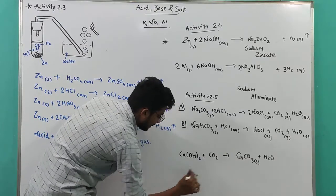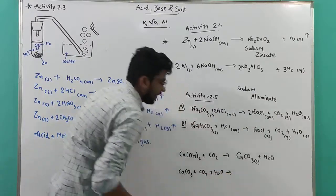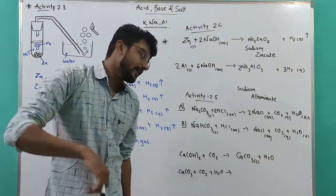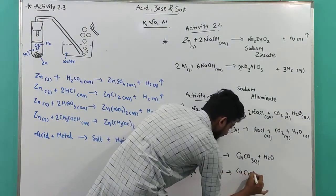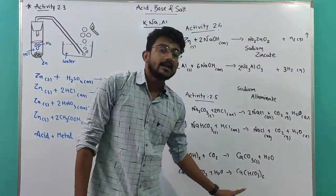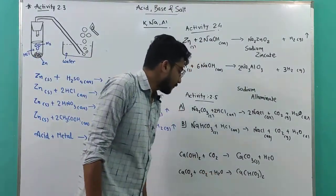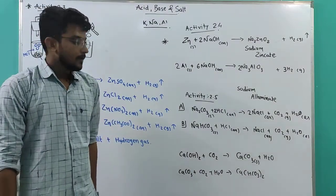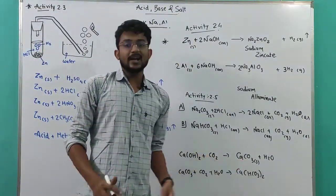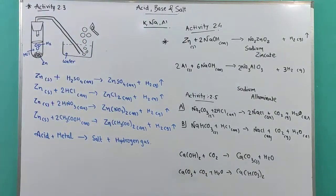If excess carbon dioxide is passed through, the milky solution will become colorless again, forming Ca(HCO3)2 — calcium hydrogen carbonate. So the solution first becomes milky, then turns colorless again. That was Activity 2.5: metal carbonate and metal hydrogen carbonate reacting with acid.